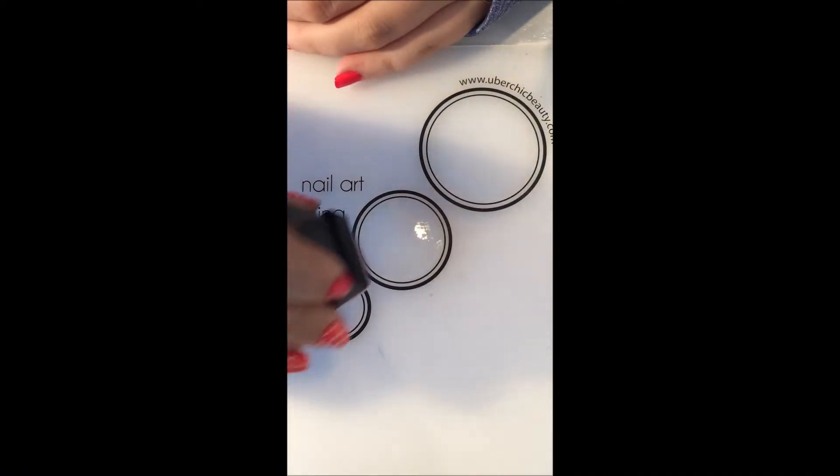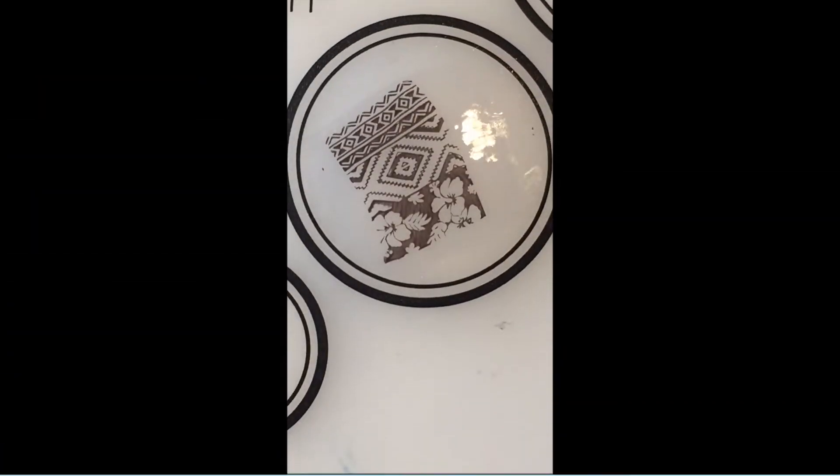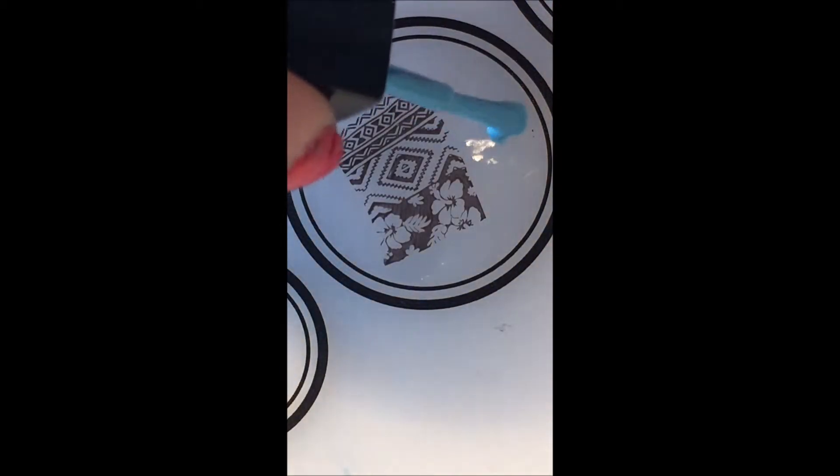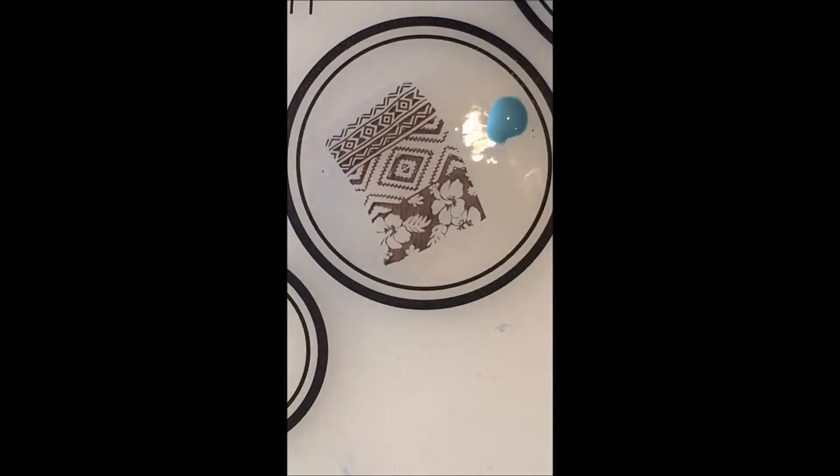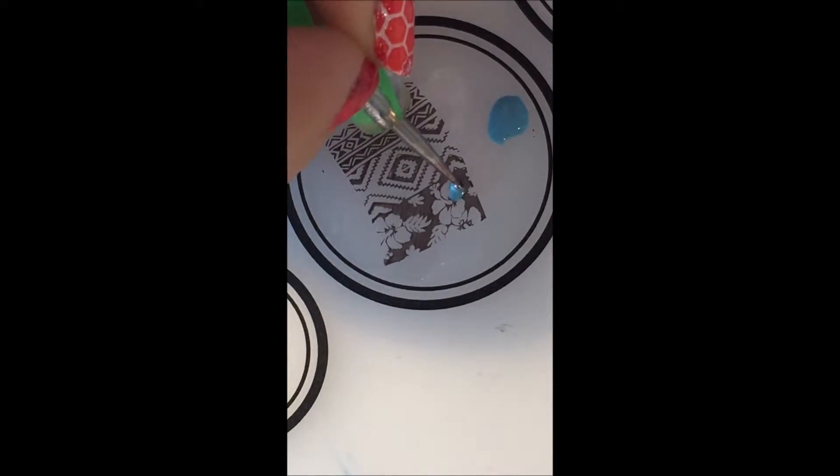You want to use the one with the clear coat on it and it goes on perfectly. If you want to fill in the image, you just want to take some of your polish, put it off to the side. You can take a dotting tool or a brush and you can go into the image like that.